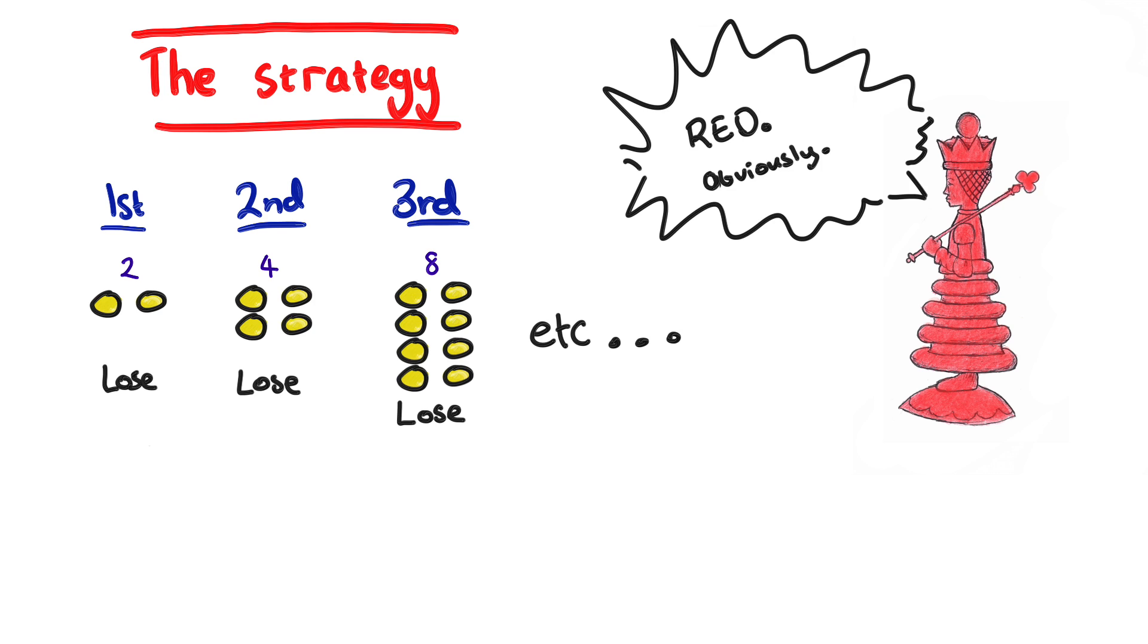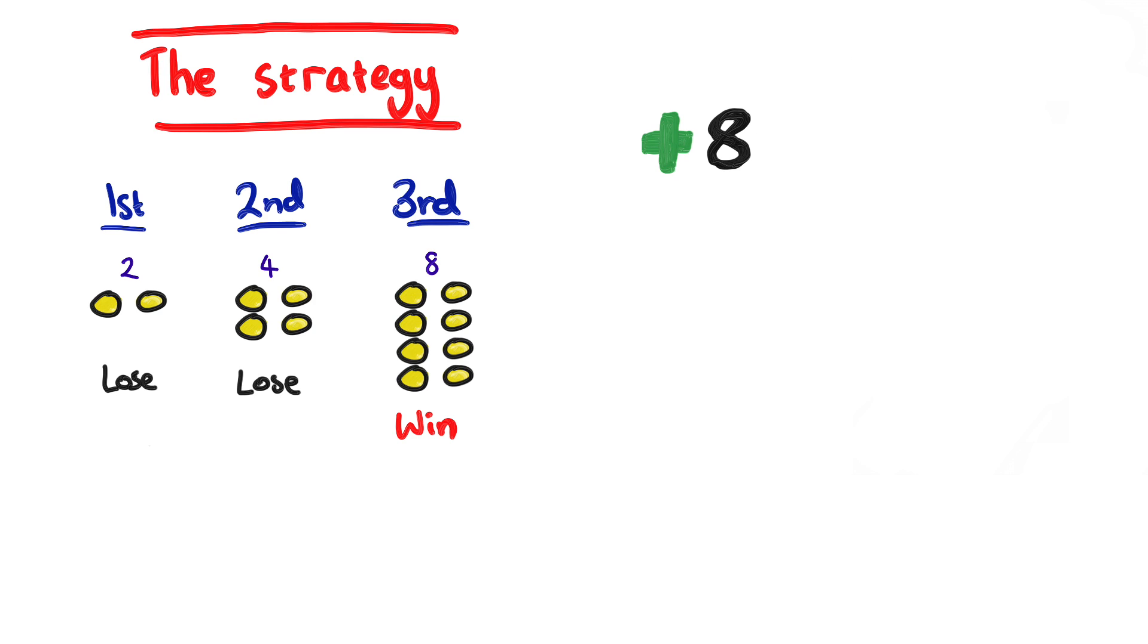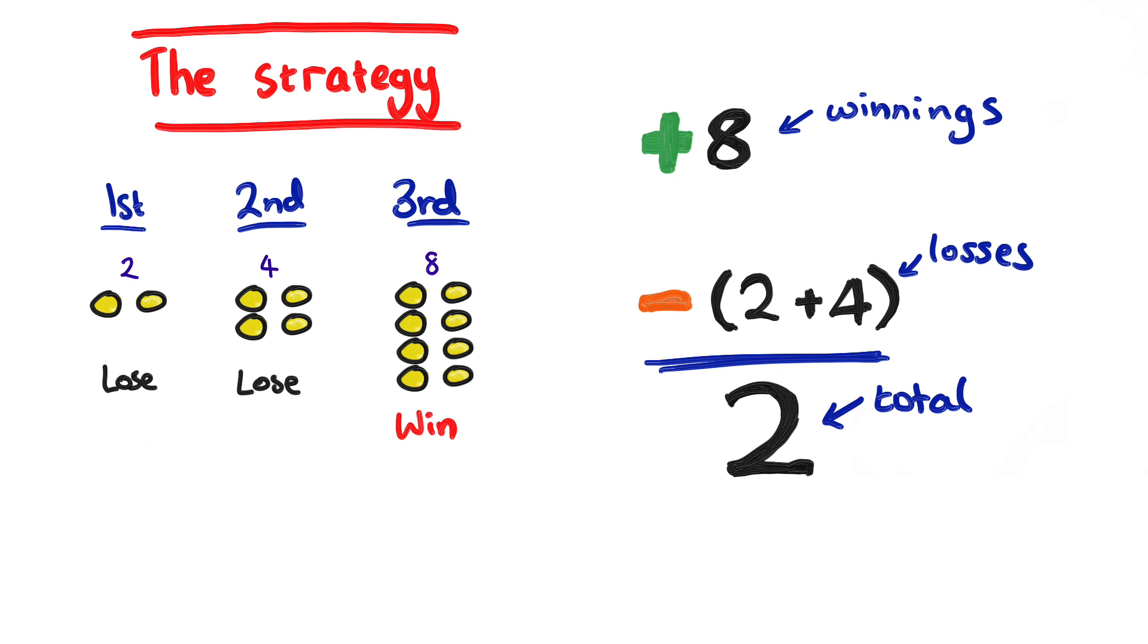Then say you won on round 3. You win 8, which covers all of your previous losses. The beauty of this is, you will win eventually, and whenever that is, you win back everything you lost, and then some.